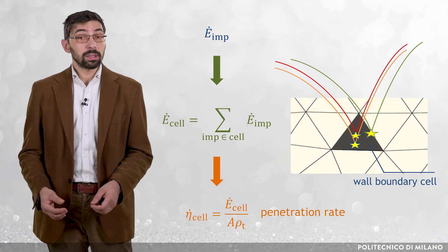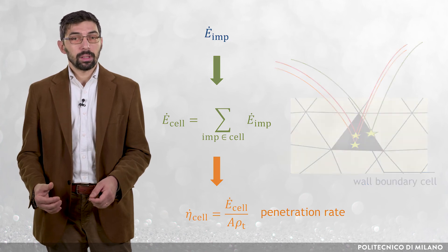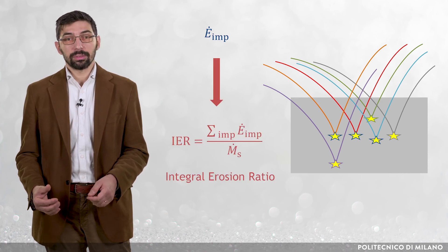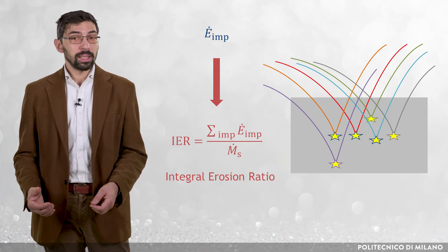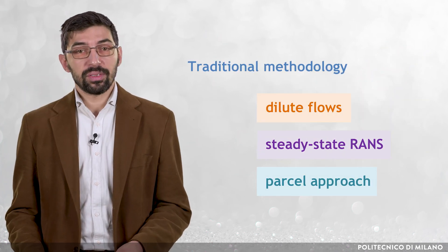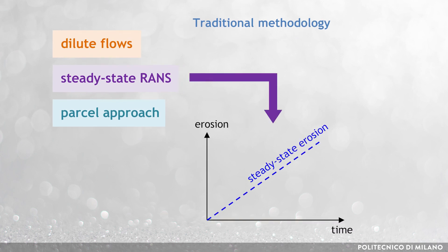This parameter represents the speed at which the erosion depth increases at the current cell. Finally, the integral erosion ratio is calculated by summing up the mass flow rates of material removed for all particle-wall impingements, and dividing by the total solid mass flow rate, dot M_S. Coherently with the steady-state nature of RANS-based Eulerian-Lagrangian models, the traditional procedure predicts steady-state erosion, in the sense that the mass removal and the erosion depth distribution increase linearly in time, and the integral erosion ratio is constant.